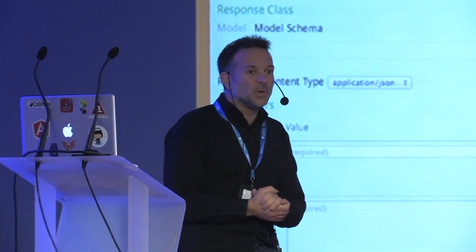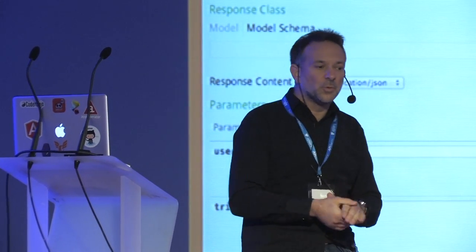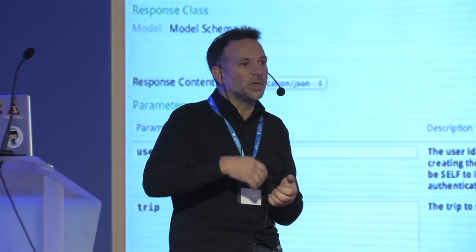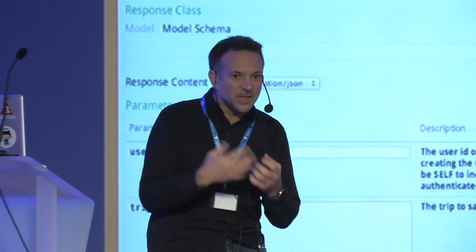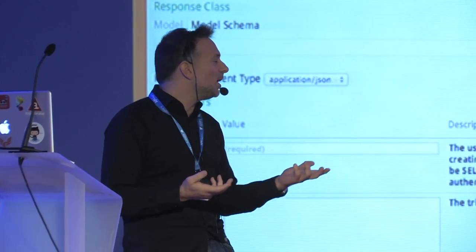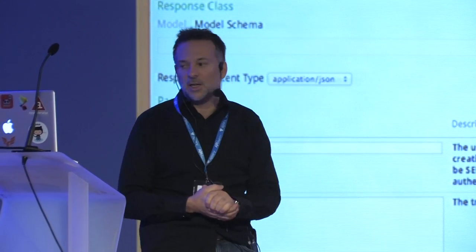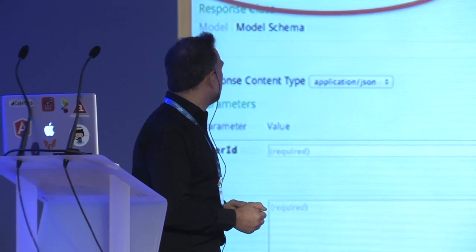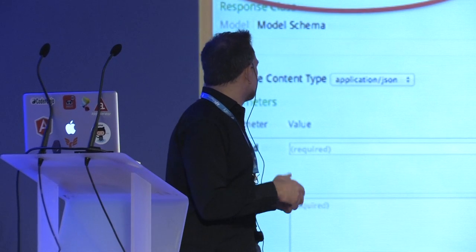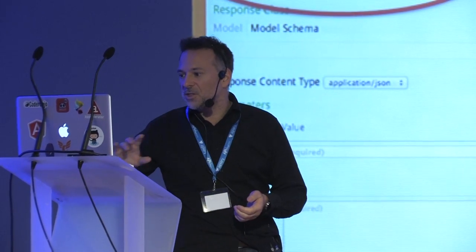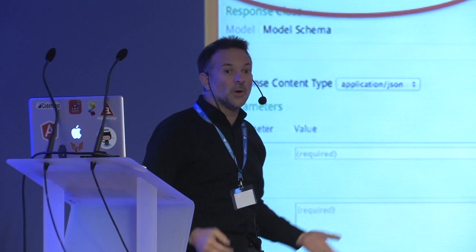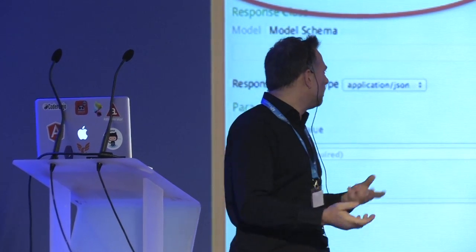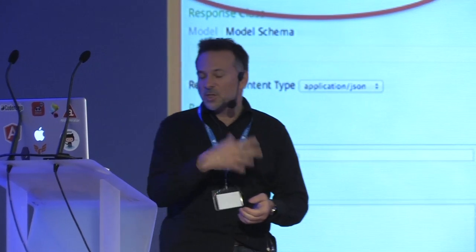We support authenticated calls — a lot of the calls require the user to be authenticated. For example, if you want to see your profile or get your trips and matches, you need to be authenticated. The API documentation website lets you authenticate directly: for example, this call is to create a trip or schedule for your authenticated user, and by clicking the auth button it will open a pop-up to authenticate.